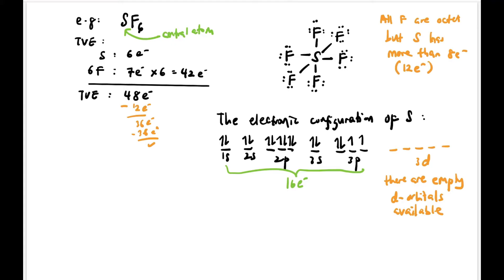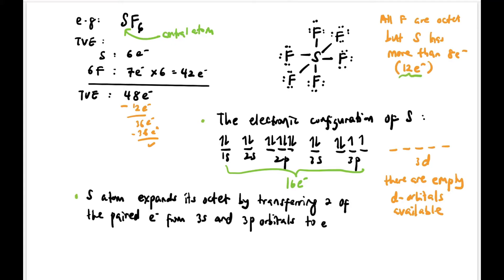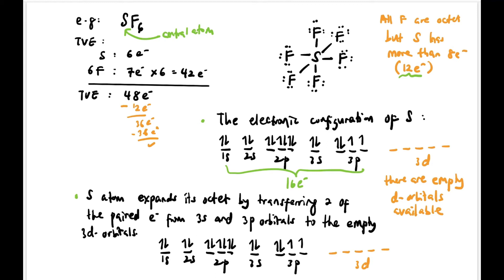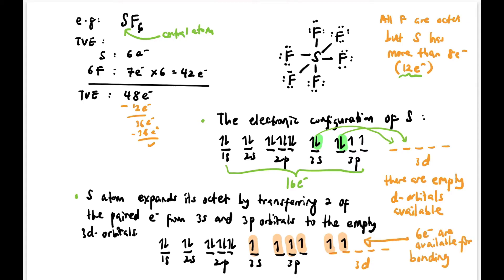To explain this, S has 16 electrons total. Its electron configuration fills up to 3p, but there are empty 3d orbitals available. S expands its octet by transferring two of the paired electrons from 3s and 3p to the empty 3d orbitals, making them single electrons. This gives 6 electrons available for bonding, which is why S forms 6 covalent bonds, contributing 12 electrons.